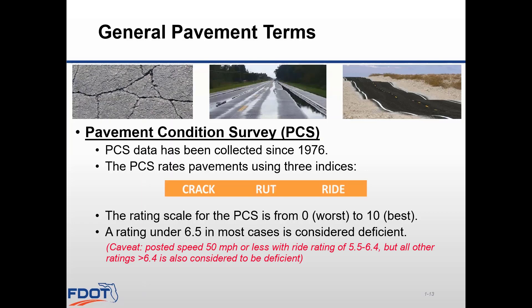One caveat to the rating system: if you have a road with a posted speed of 50 miles an hour or less and it has a ride rating between 5.5 and 6.4, it is also considered deficient even if its other ratings are 6.5 or higher. These details are found in Chapter 27 of FDOT's Work Program Instructions. After all the upgrades to our mixes, specifications, QC efforts, funding, and condition monitoring, we're seeing pavements that last on average 14 to 19 years — dense graded asphalts last 18 to 20 years, and open graded mixes typically last 13 to 15 years.